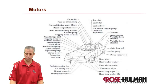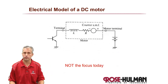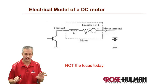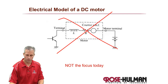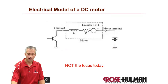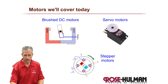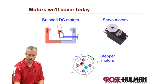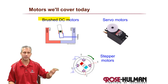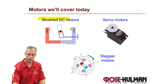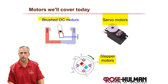Today we're going to talk about motors and how we use them in this class. We've already looked at the electrical side — why we need snubber diodes and things like that — but that's not the concern today. We're going to talk about how they work internally and how you control them. We'll cover three types: brushed DC motors, stepper motors, and servo motors.